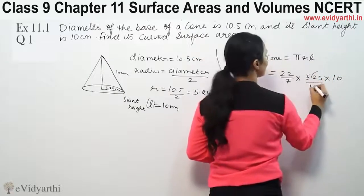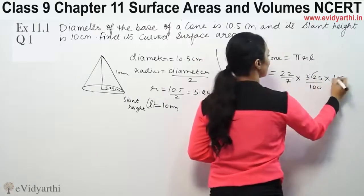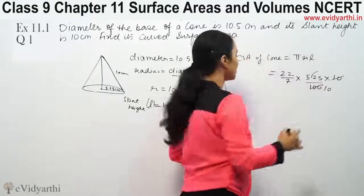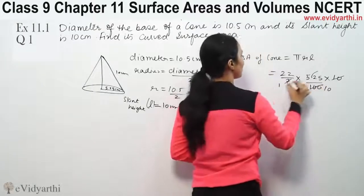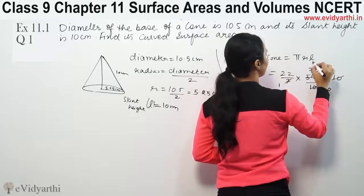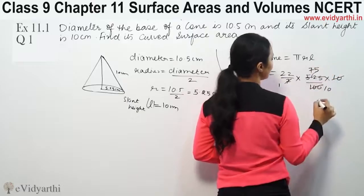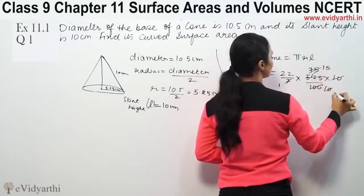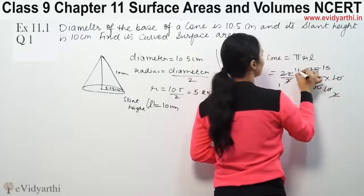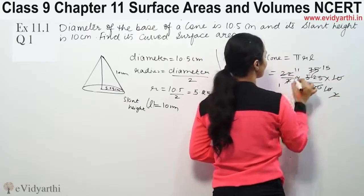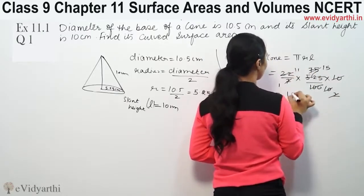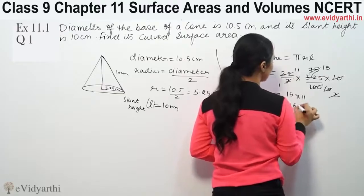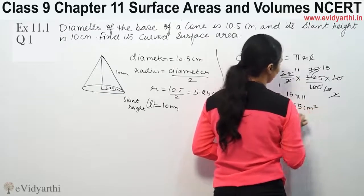Removing the decimal, 5.25 becomes 525 over 100. Substituting: 22 by 7 times 5.25 times 10. After simplification, 15 times 11 gives us 165 cm squared.